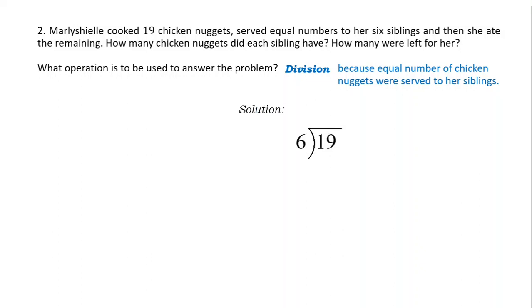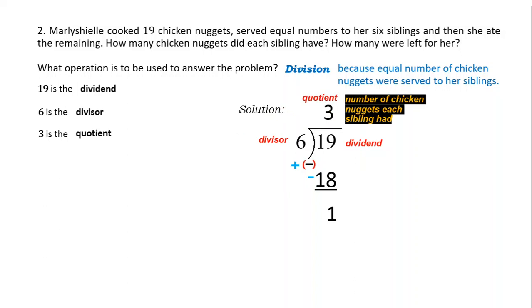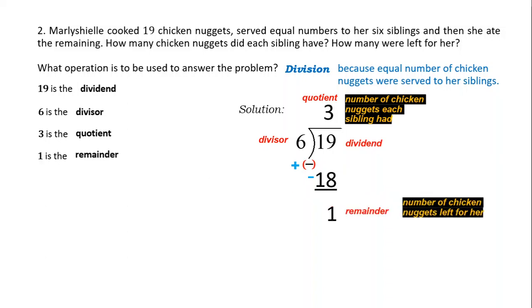Solution. 19 divided by 6 is 3. 3 times 6 is 18. Subtract — change the sign of the subtrahend and then proceed to addition. 19 plus negative 18 is 1. Let's label: 19 is the dividend, 6 is the divisor, 3 is the quotient — that is the number of chicken nuggets each sibling had — and 1 is the remainder, which is the number of chicken nuggets left for Marley Shell.